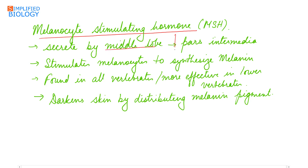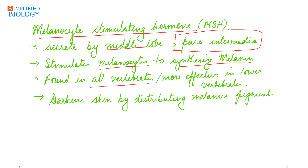Melanocyte stimulating hormone (MSH) is secreted by the middle lobe, pars intermedia. It stimulates melanocytes to synthesize melanin, the pigment. MSH is found in all vertebrates but is more effective in lower vertebrates like rats and rodents. It darkens the skin by distributing the melanin pigment.